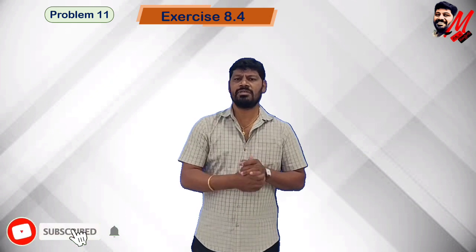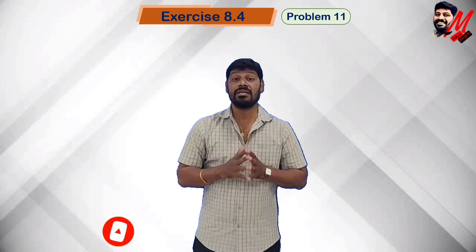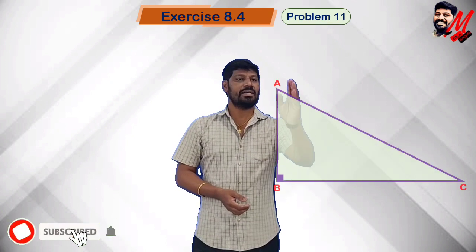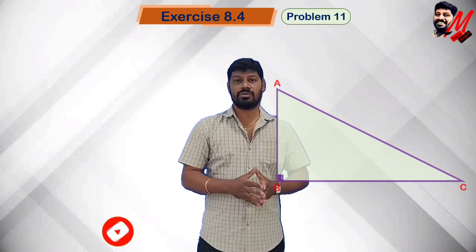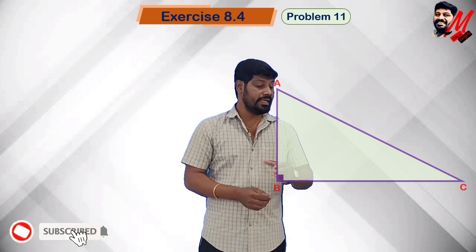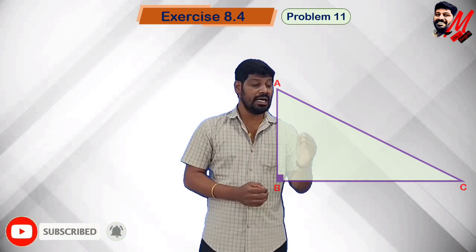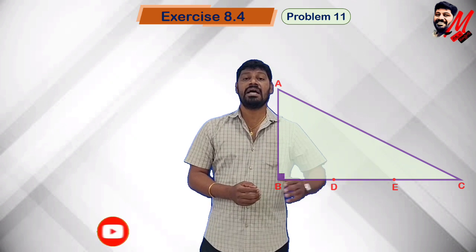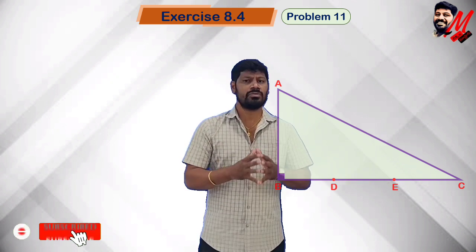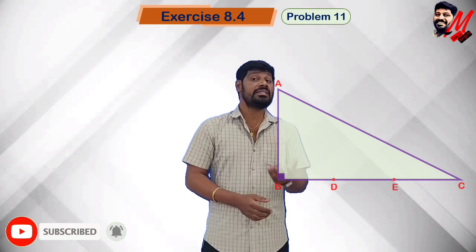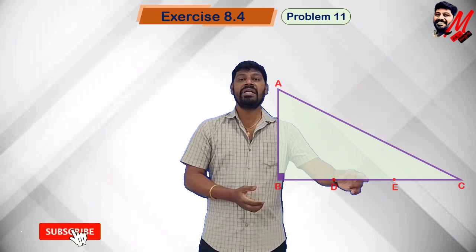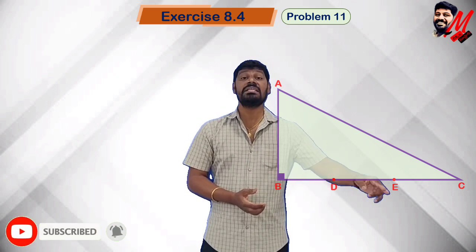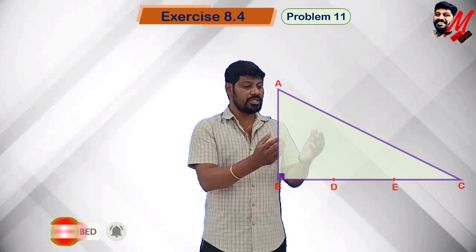Straight forward, we will discuss the problem with Pythagoras' theorem. A, B, C form a right triangle with angle 90 degrees. Another information is: on the BC side, D and E are two trisection points. The points BD, DE, and EC are equal.